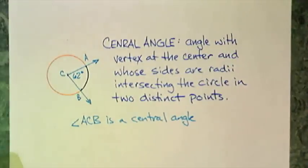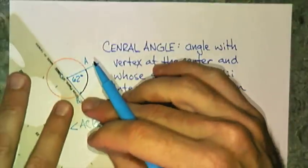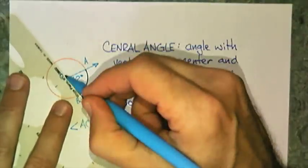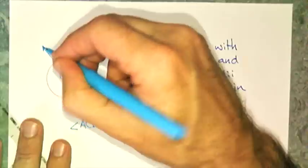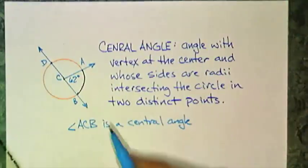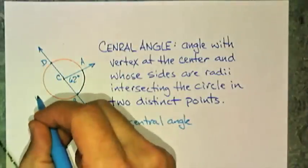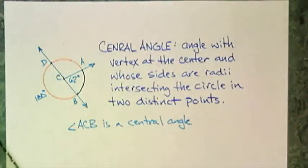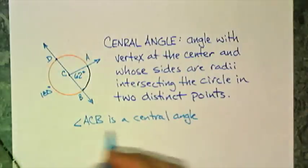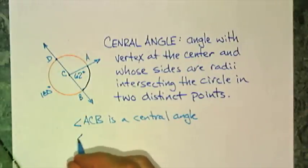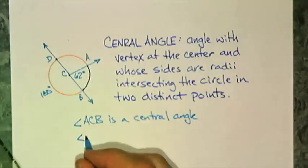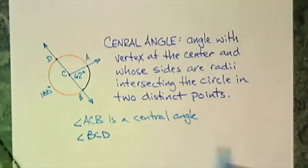And strangely enough, the angle formed by those two radii also matches the measure of the arc. Actually, it's not that strange, because if I were to continue this on and make a diameter, you already know that this arc, this semicircle, has a measure of 180 degrees.